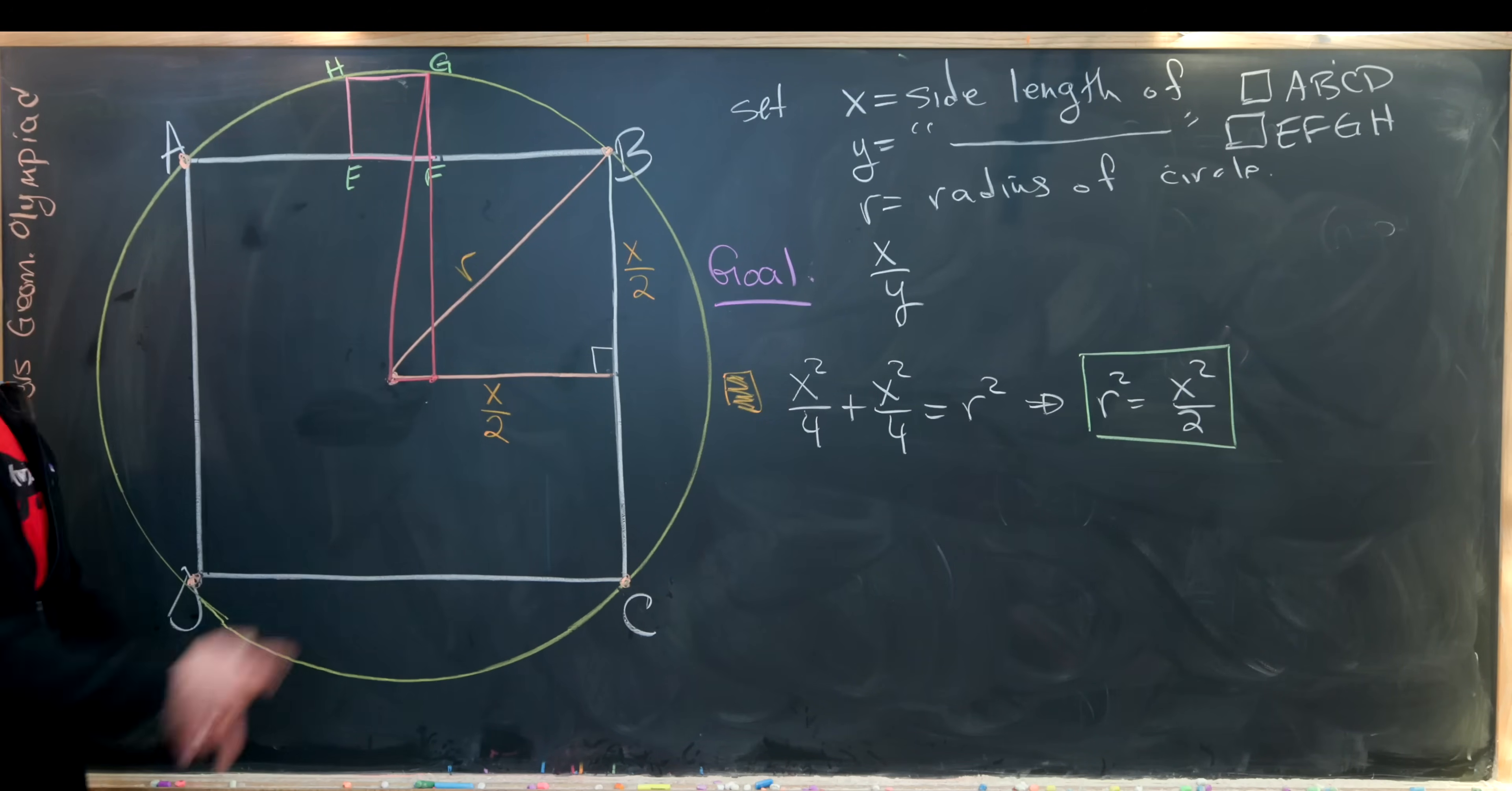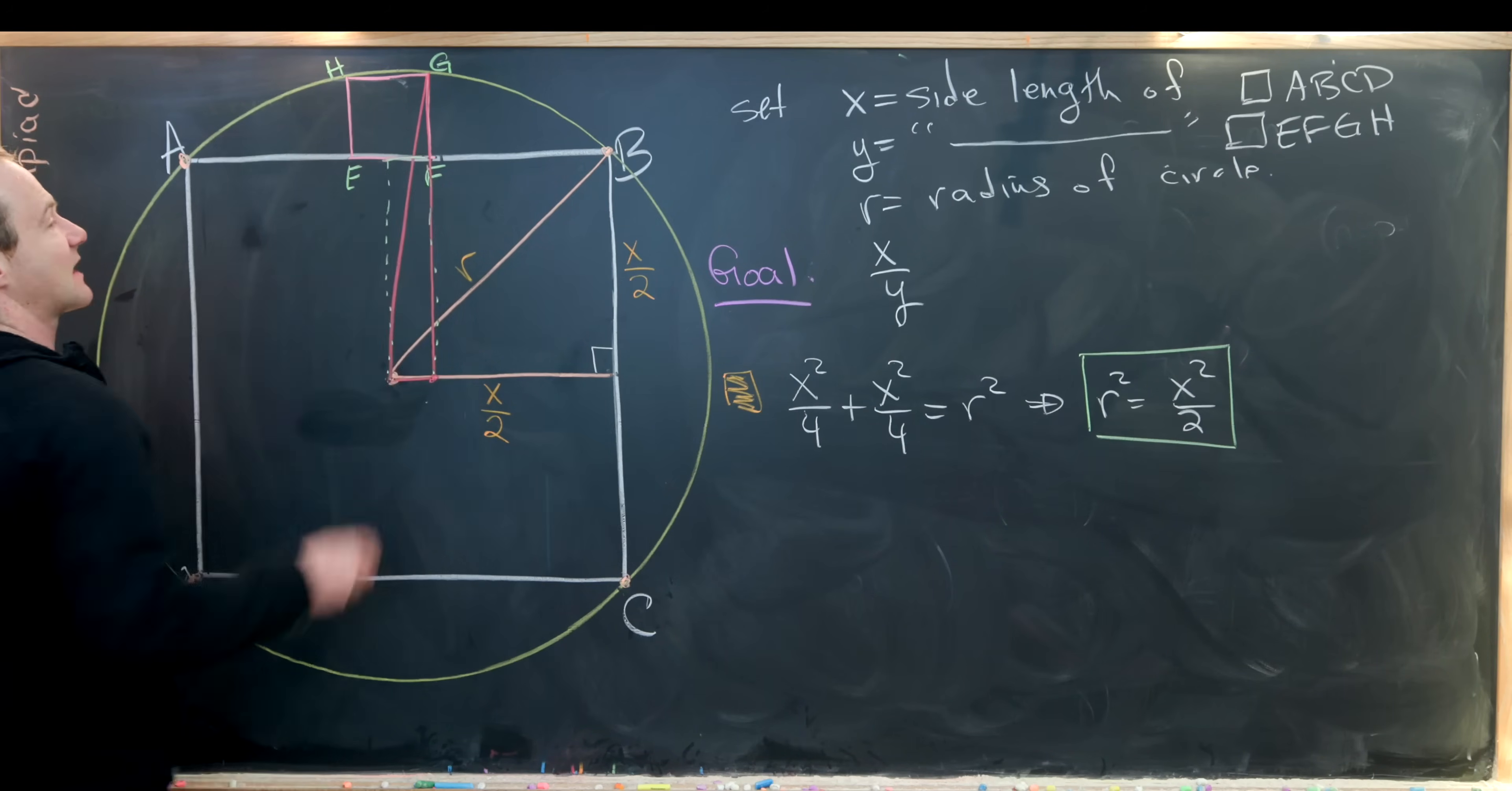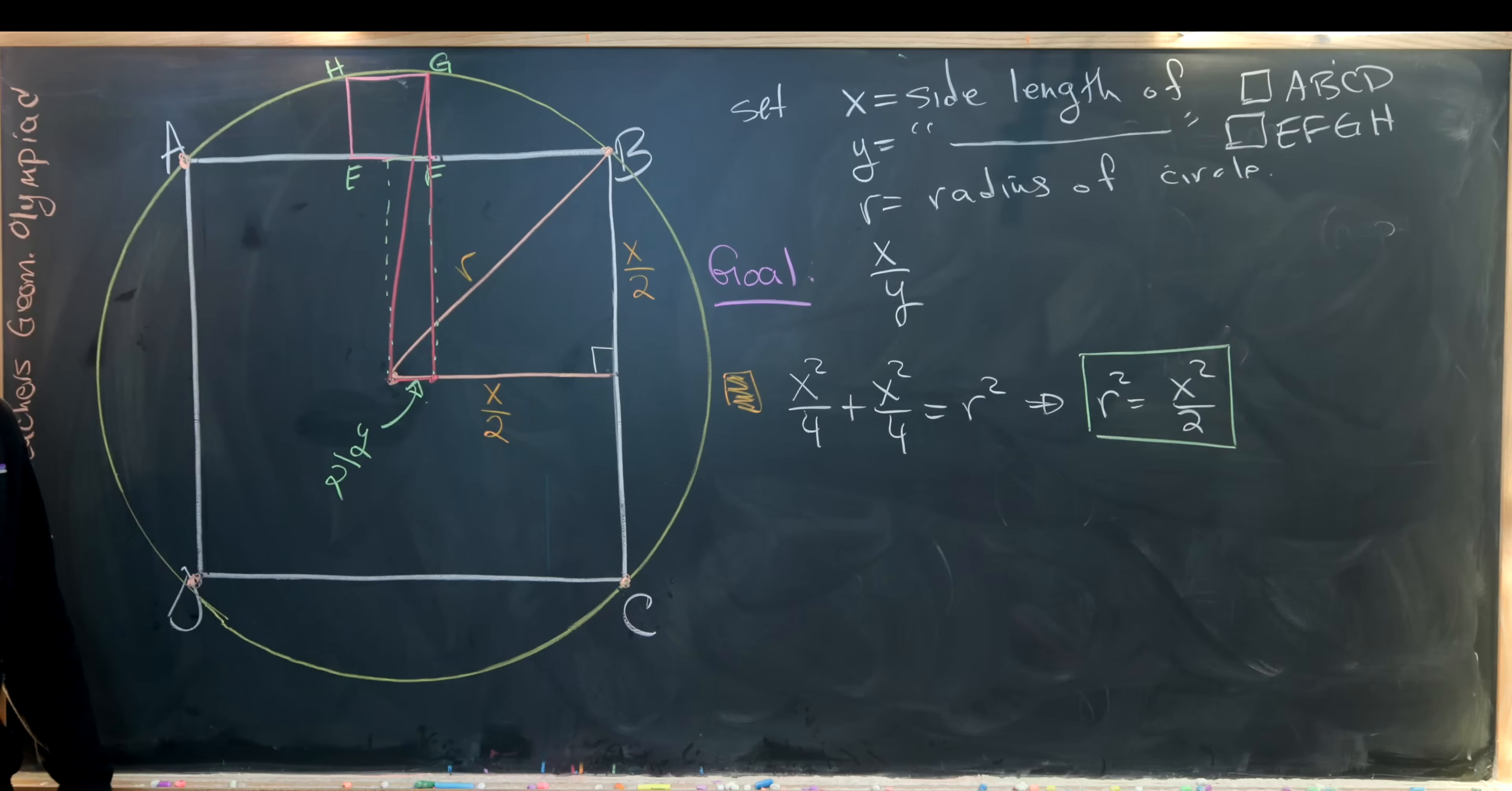And now we just have to find the measurements of that triangle. So let's start looking at the length of this segment. If we project it up onto our little square, we'll see that it's exactly half the side length of our little square. So that tells us this segment right here has length Y over 2.